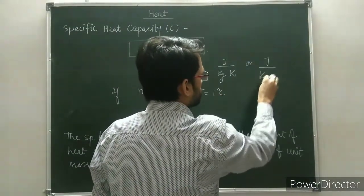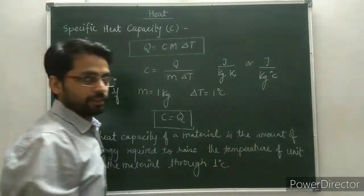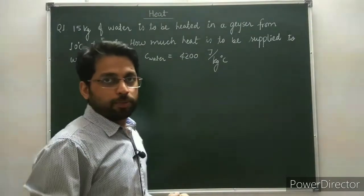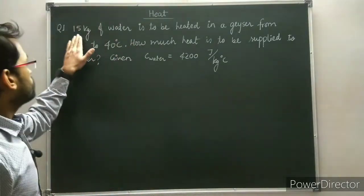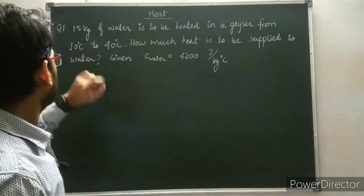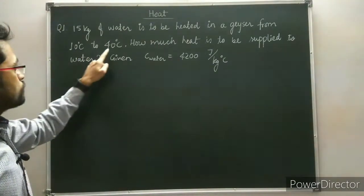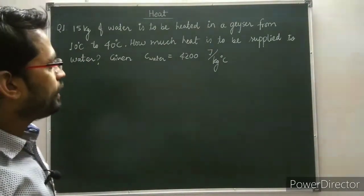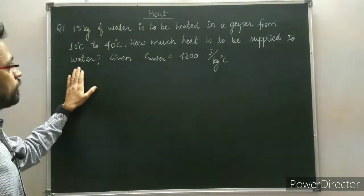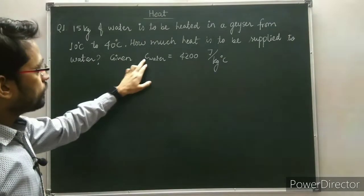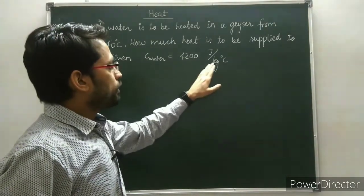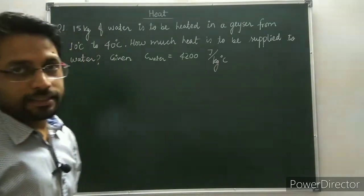Now let's do a numerical. 15 kg of water is to be heated in a geyser from 10 degrees Celsius to 40 degrees Celsius. How much heat is to be supplied to the water? Given: the specific heat of water is 4200 J/(kg·°C).